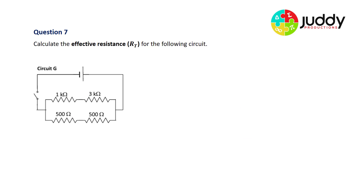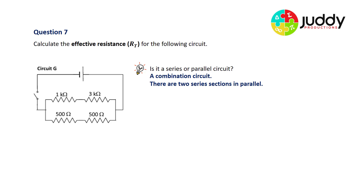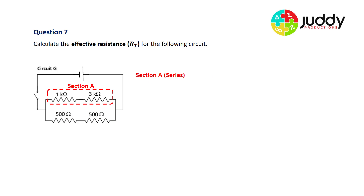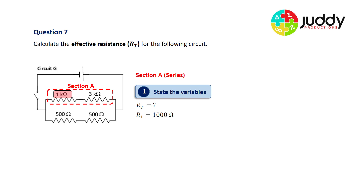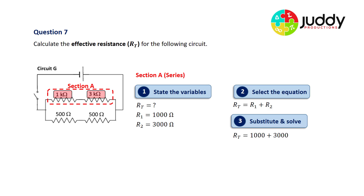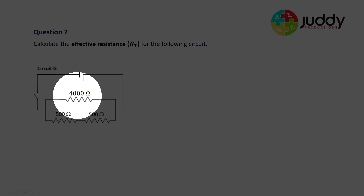Question seven: calculate the effective resistance for the following circuit. This is a combination circuit — there are two series sections in parallel. Section A has a 1 kilohm and a 3 kilohm resistor in series. The first resistor is 1,000 ohms and the second is 3,000 ohms. Using the series equation and substituting 1,000 and 3,000, we get a total effective resistance of 4,000 ohms for the top branch. That series combination is replaced by a single 4,000 ohm resistor.